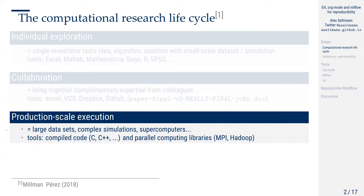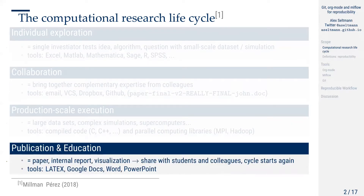Then, in some kinds of research like working with high-performance computing, there's usually another stage where we have to transform our code so that it is runnable on those machines. They usually need compiled code or some special computing libraries, which might be different from our initial exploration. And finally, at some point we want to publish, write an internal paper or report, or visualize our results. This again needs different tools like LaTeX, Google Docs, Word, or PowerPoint. So these are the tools which are used at the moment.